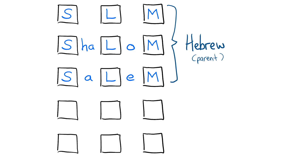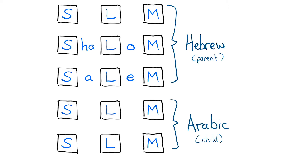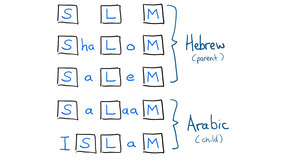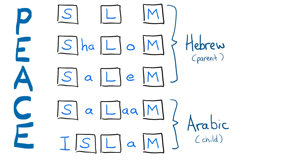Hebrew is a parent language of Arabic. You can see the parent-child relationship in the identical consonants — they are the same; the vowels are slightly different. Add in three A's and you have salam. Move the S over, slide it over to the L, add an I and an A, and you have Islam.